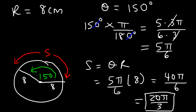If you want the decimal value of 20π/3, that is approximately 20.944 centimeters.